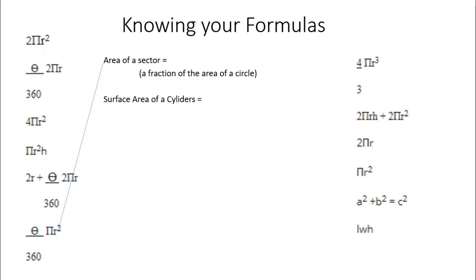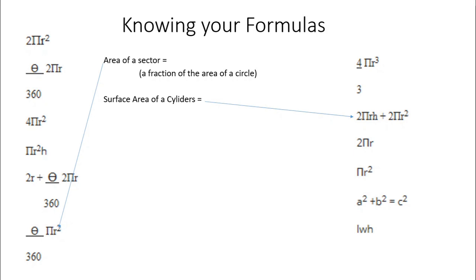The next one was the surface area of a cylinder, which includes the two circular areas on either end and the rectangular shape that wraps around the cylinder. You can see it ends with two pi r squared — that's two circle areas — and it's got 2 pi r, which is the circumference of a circle, multiplied by h, which is the length of the cylinder. So basically, length times width.